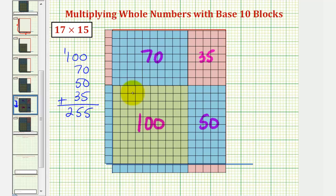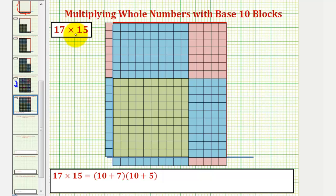Looking at these areas again, these values are actually the partial products of 15 times 17. So let's also take a look at that. To show the partial products of 15 times 17, we can write 17 as 10 plus 7, and 15 as 10 plus 5.